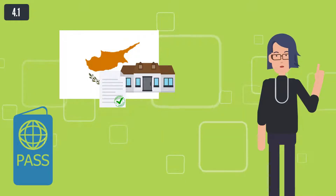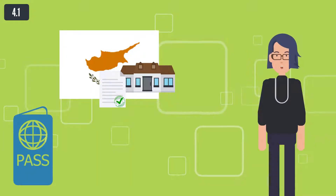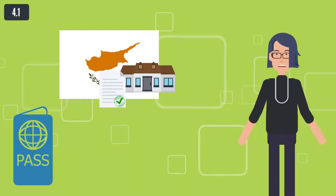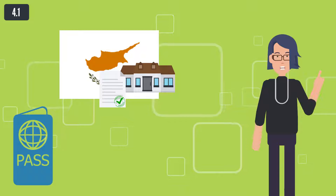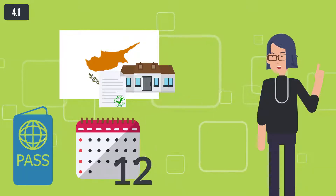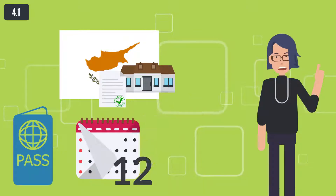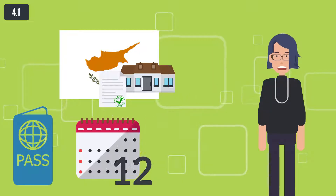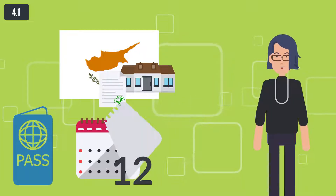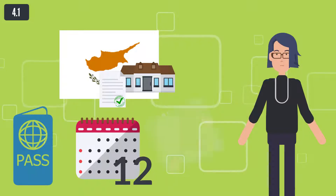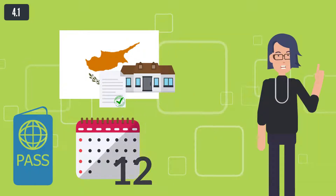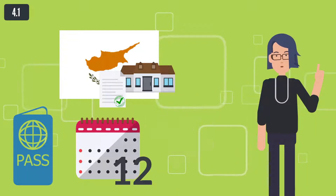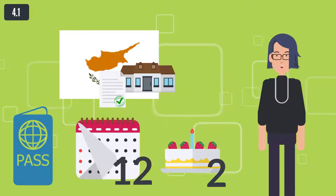The validity of the residence card shall not be affected by temporary absences not exceeding six months in a year, or by absences of a longer duration for compulsory military service, or by one absence of a maximum of twelve consecutive months for important reasons such as pregnancy and childbirth, serious illness, study or vocational training, or a posting in another member state or a third country. Once acquired, the right to permanent residence shall be lost only through absence from the Republic of Cyprus for a period exceeding two consecutive years.